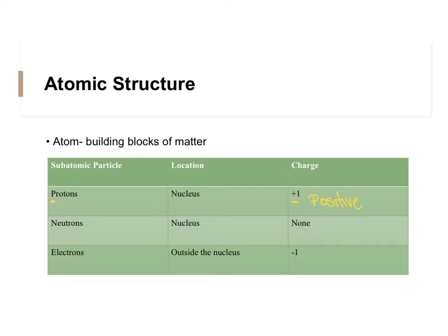Our second subatomic particle is the neutron. Neutrons are also located in the nucleus and they don't have a charge — charge of none. Neutrons start with an N; they're located in the nucleus and the charge is none. Also, neutron sounds like neutral, which means it doesn't have a charge.